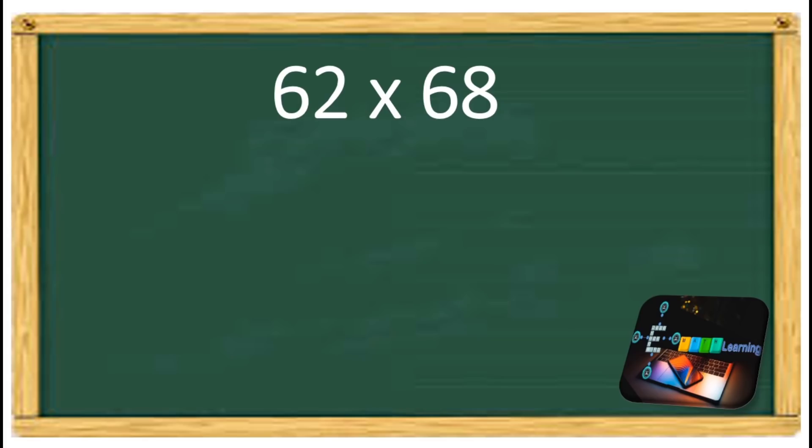For example, 62 and 68. You can see the tens digits are the same, and the ones digits add up to 10, so 2 plus 8 is 10.